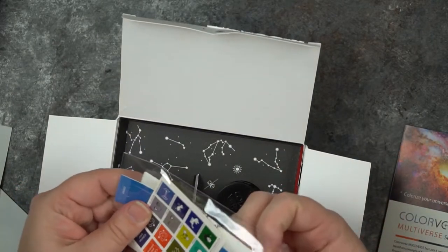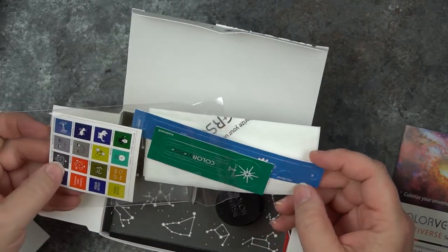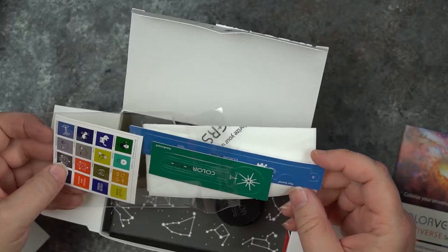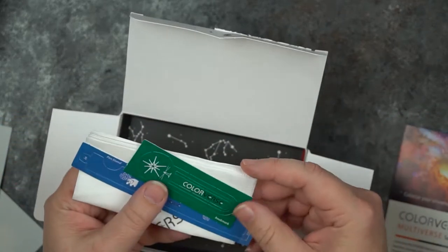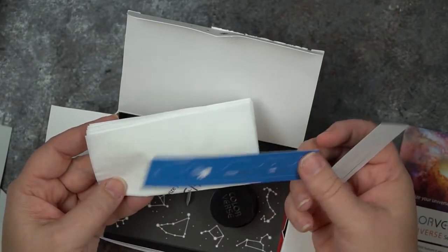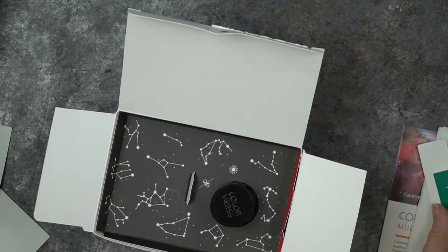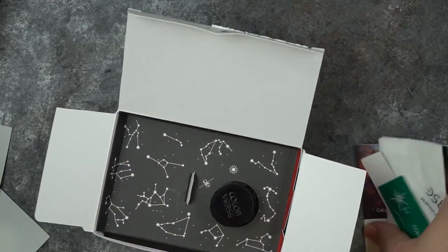They come with tchotchkes. They come with stickers. You get a bookmark and a pen stand. You get a napkin to wipe off your ink and you get some stickers to go with it.